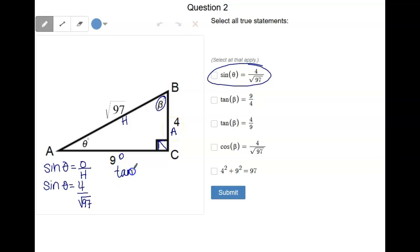So now we have tangent of beta is equal to, and tangent is always opposite over adjacent. So we have tangent of beta is equal to the opposite is 9 and the adjacent is 4. So tangent of beta would be 9 over 4. So this one will work.